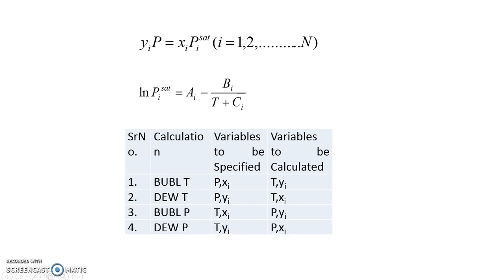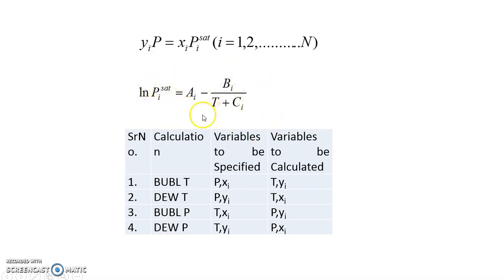Let us revise certain things. This is the ideal Raoult's law equation we are going to use. This is how we calculate vapor pressure, where units of pressure and temperature are important when using the vapor pressure equation. This equation can be modified to find the boiling point.